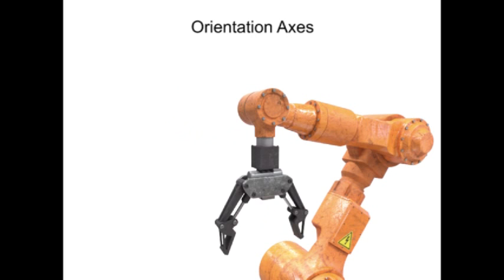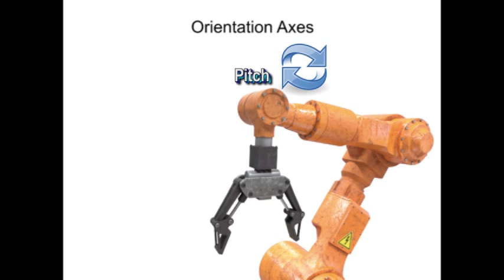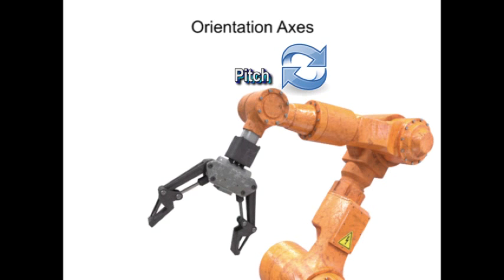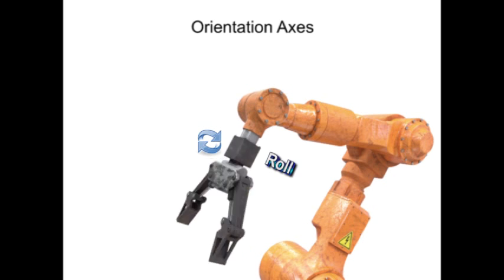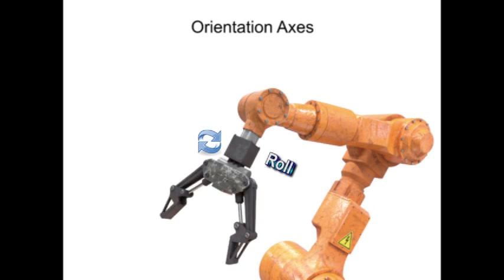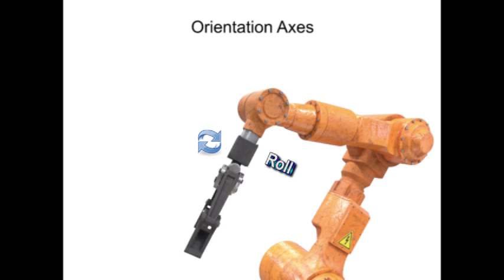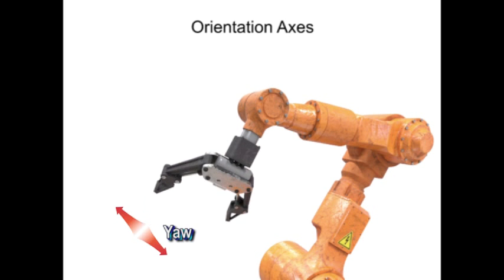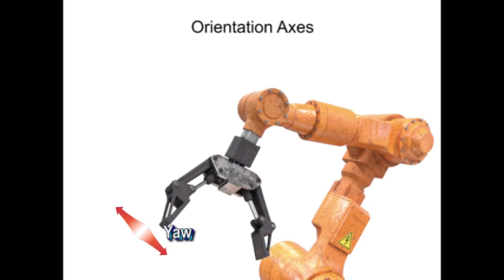The robot's tool moves in the same way. Pitch moves the tool vertically. Roll rotates the tool about its center axis. Yaw turns the tool left and right.